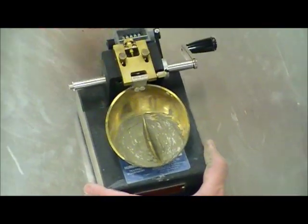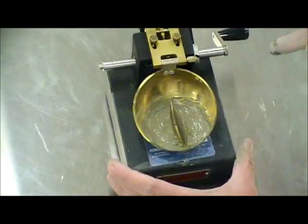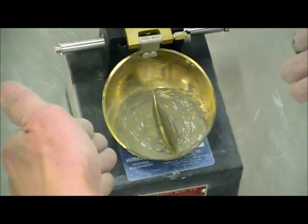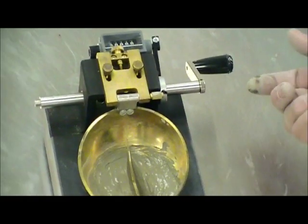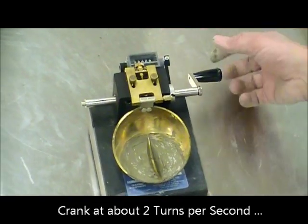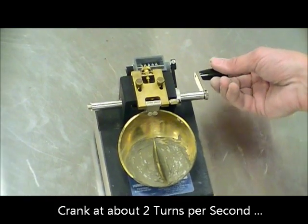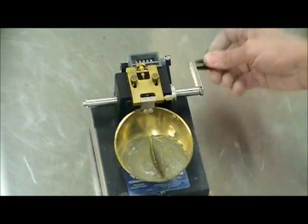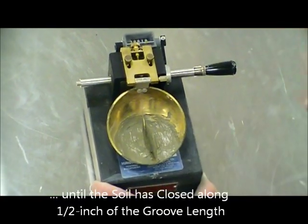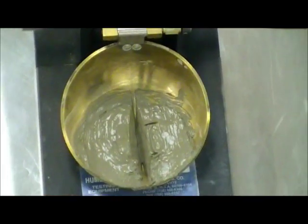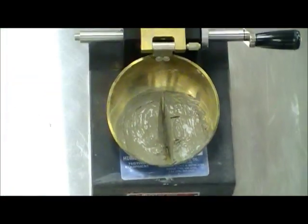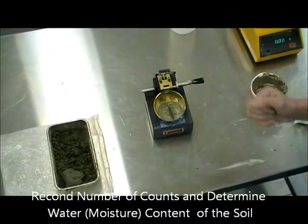The idea here is we're going to zero the counter and we're going to start counting the number of revolutions that it takes for that gap to close for a distance of half an inch. So the procedure is to turn it, two revolutions per second approximately steady. And the counter is going to take care of the numbers. You're starting to see the gap closing right there. We have closed the gap by about half an inch. And that's the distance I'm talking about, where the bottom of that groove has closed. So this would be exactly ten counts for that moisture content.